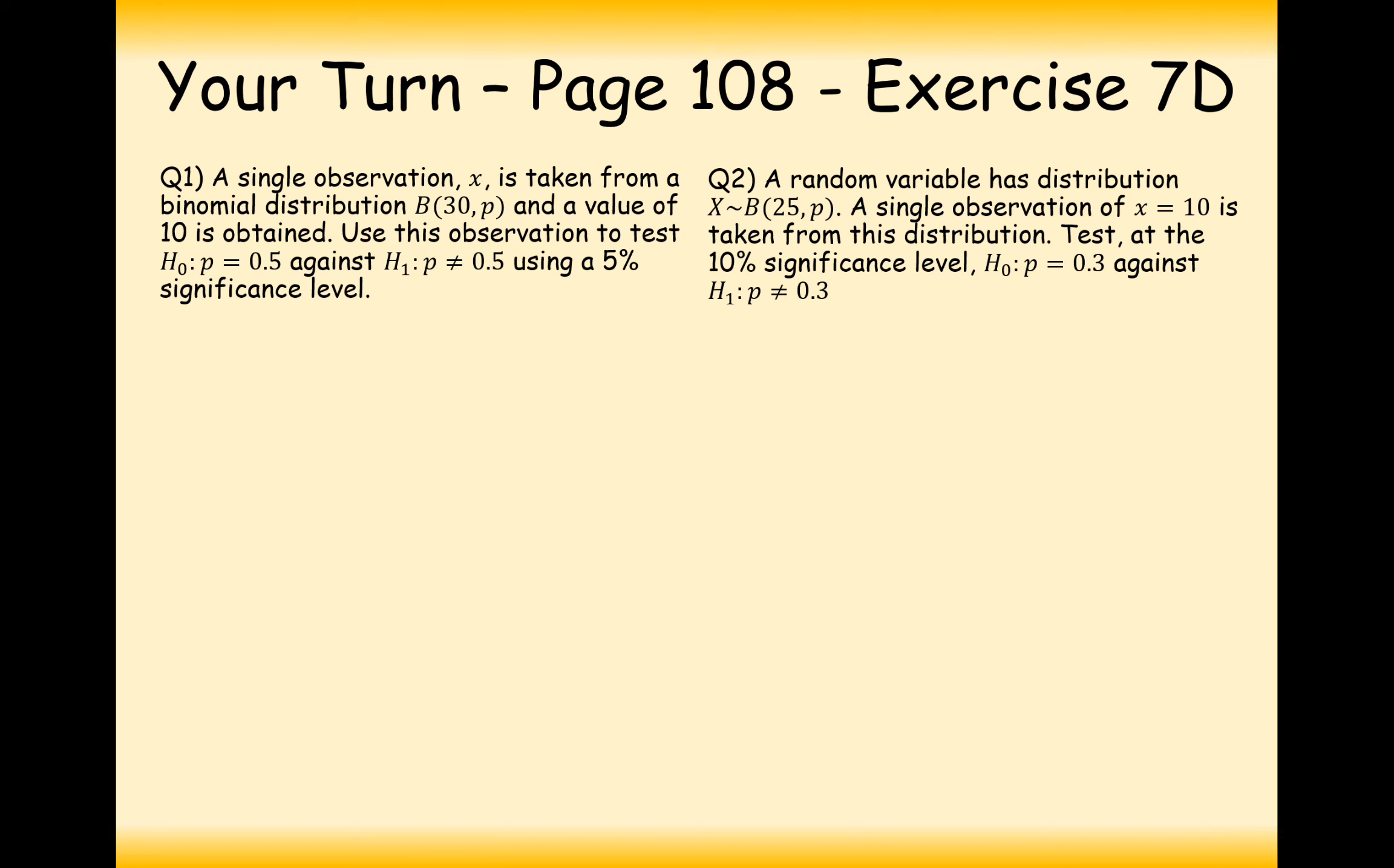Right then, well done for having a go at these two questions then. So, question 1 then. A single observation, X, is taken from a binomial distribution with 30 trials and an unknown probability. And the value X equals 10 is obtained. Use this observation, H0 equals 0.5, H1 is not 0.5, so definitely a two-tailed test then, using it at the 5% significance level. So, because it's a two-tailed test, we have to split this 5% up into 2, 2.5%, so either tail of the distribution.